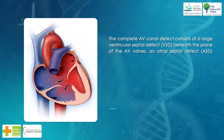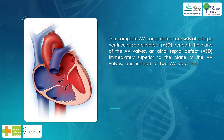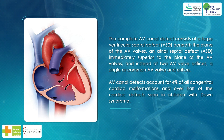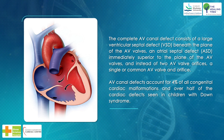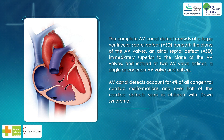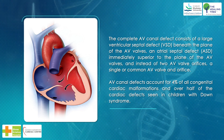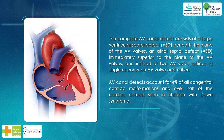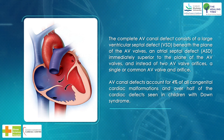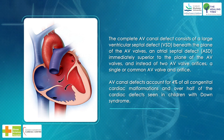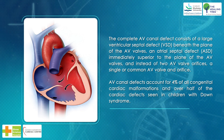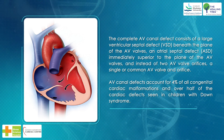The complete AV canal defect consists of a large ventricular septal defect (VSD) beneath the plane of the AV valves, an atrial septal defect (ASD) immediately superior to the plane of the AV valves, and instead of two AV valve orifices, a single or common AV valve orifice. AV canal defects account for 4% of all congenital cardiac malformations.